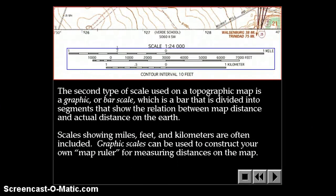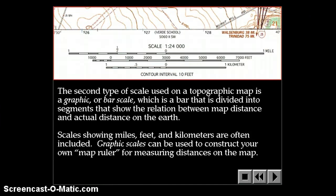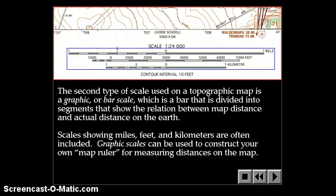The second type of scale used on a topographic map is a graphic or bar scale, which is a bar that is divided into segments to show the relation between map distance and actual distance on Earth. Scales showing miles, feet, and kilometers are often included. Graphic scales can be used to construct your own map ruler for measuring distances on the map.